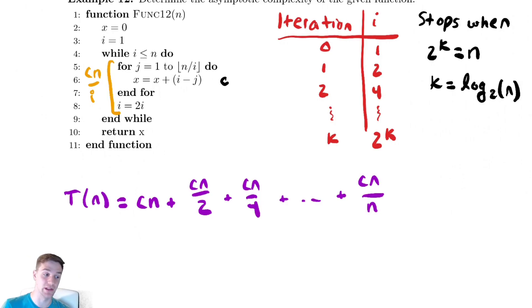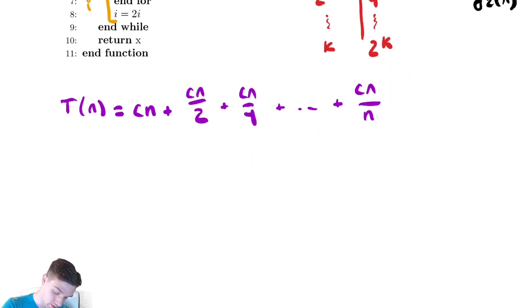Let's factor out the largest value of the summation. This equals cn times 1 plus 1 half plus 1 fourth plus all the way down until 1 over n.